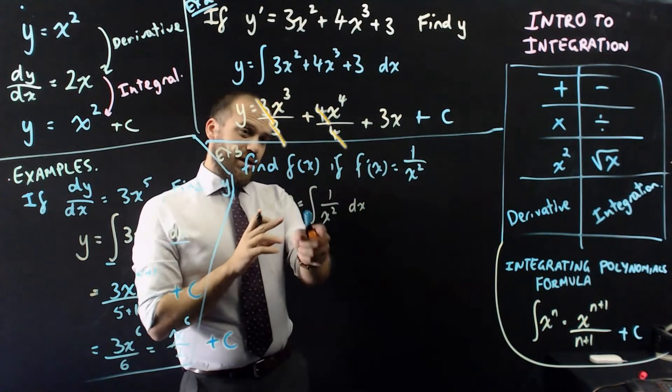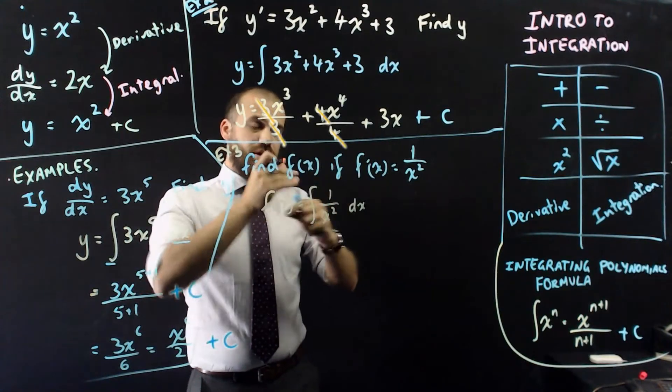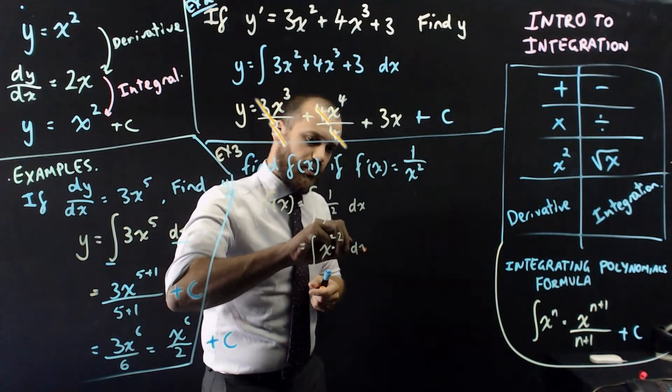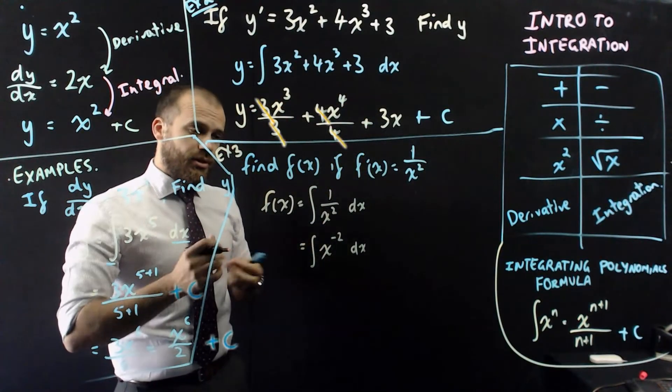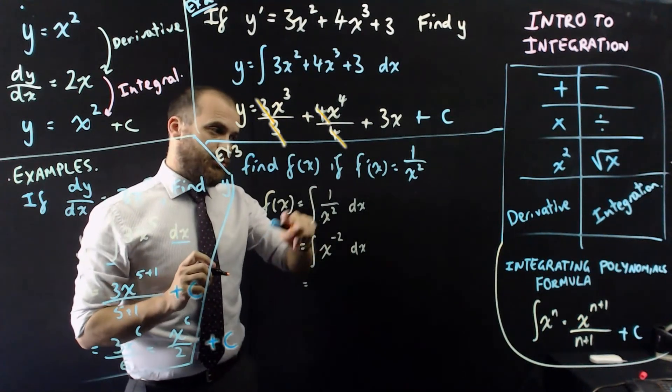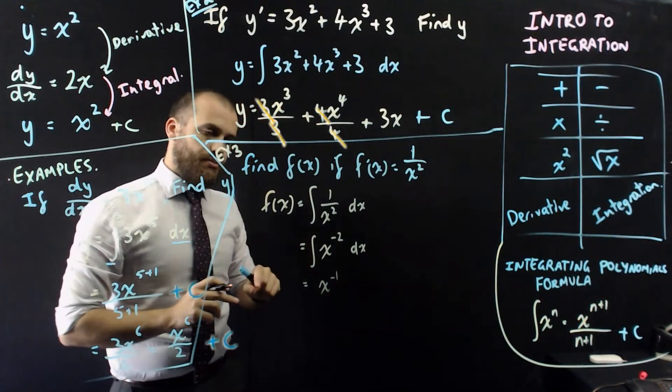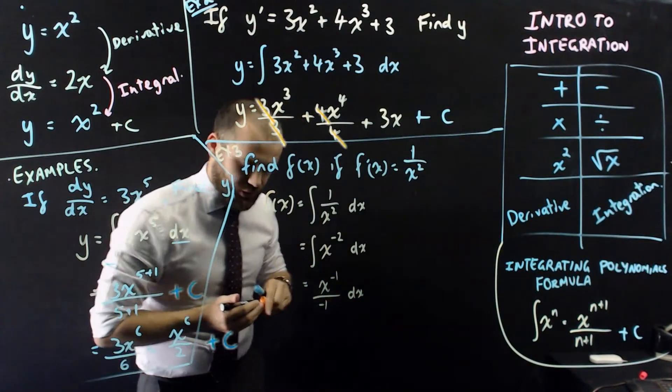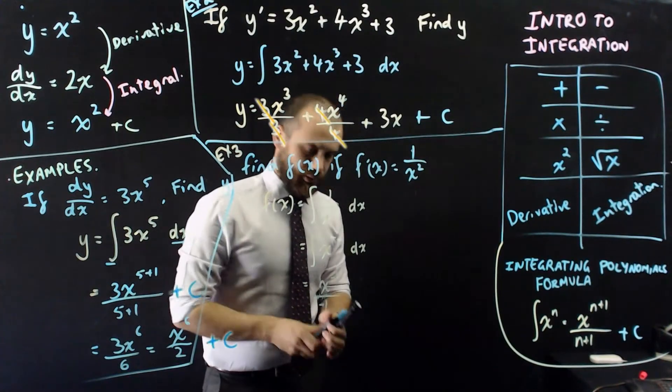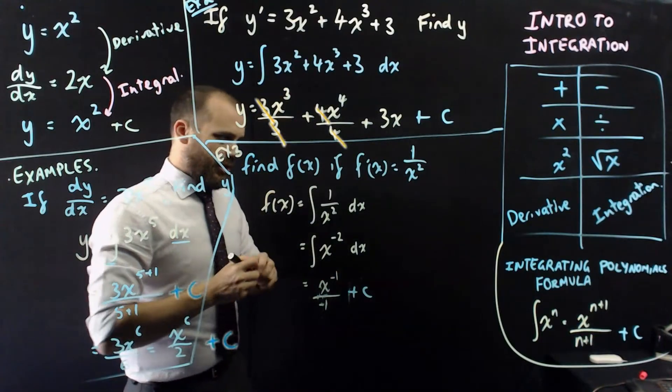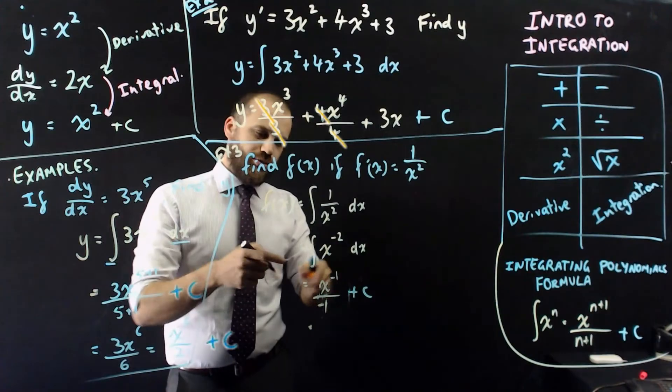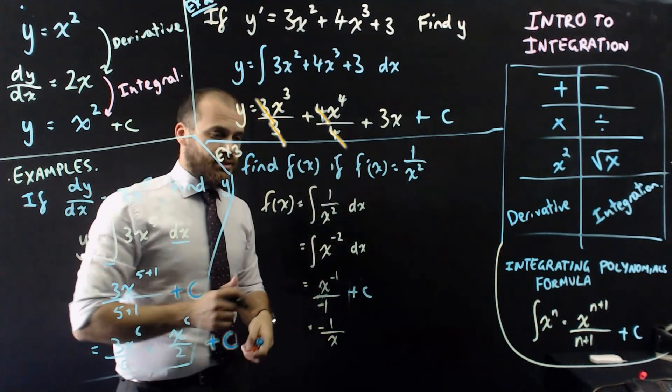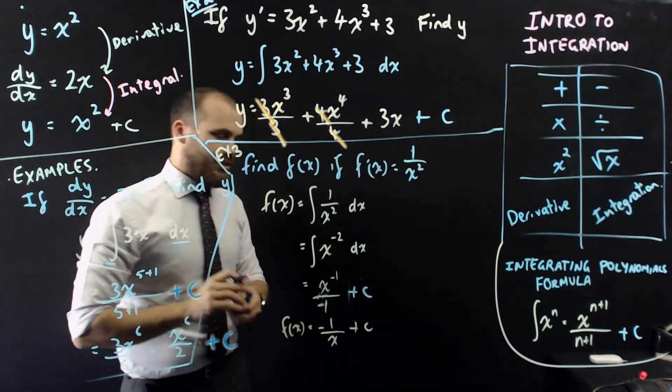Now, just like with derivatives, I can't really deal with that straight away, but I need to sort of rearrange it a little bit so I can deal with it. Equals the integral of x to the negative 2, with respect to x. Now, that, I can deal with. So, increase the power by 1, negative 2 becomes negative 1. Divide by the new power, so divide by negative 1, with respect to, don't need the with respect to x anymore, but I do need something else. Plus c. Alright. So, simplifying that a little bit, it becomes negative 1 over x, because x to the negative 1 is the same as over x plus c. So, that's what f of x is in this scenario.